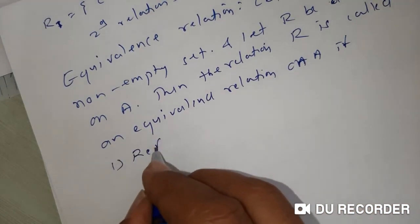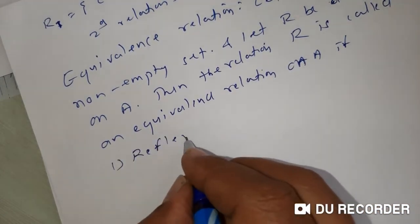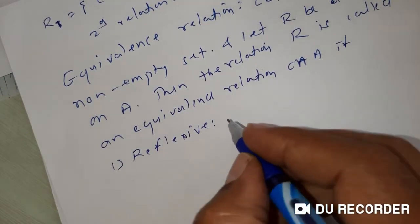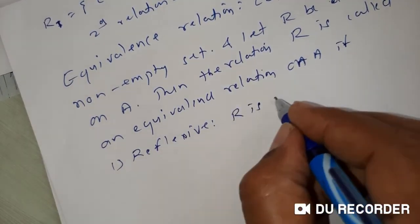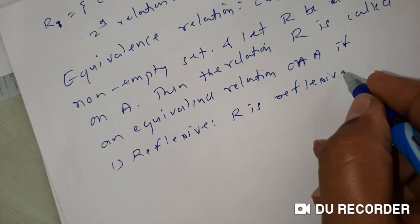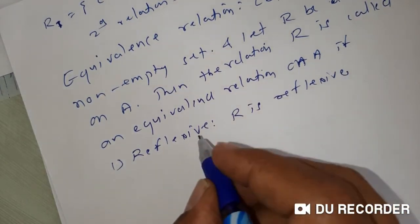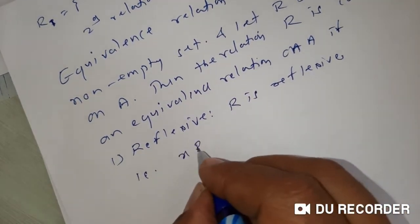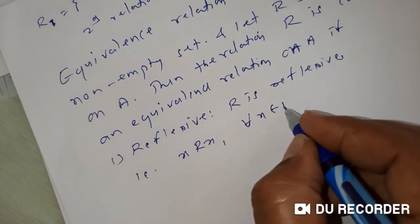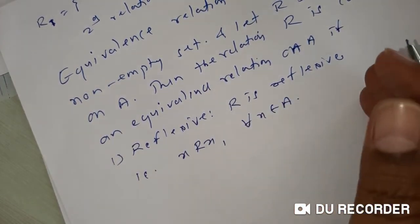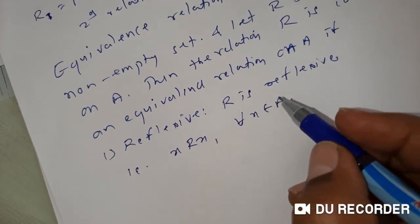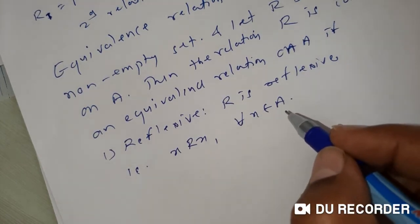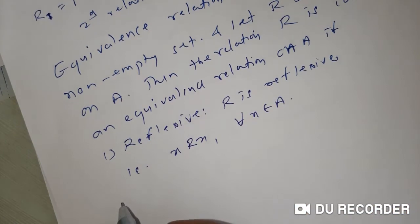Property number one: R is reflexive. That is, x is related to x for all x belonging to A — meaning every element of the set A is related to itself. Then we say the relation is reflexive.